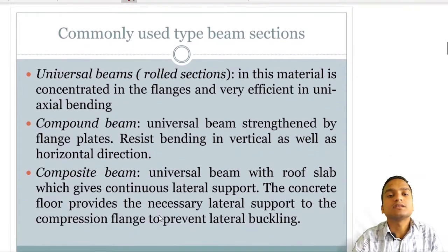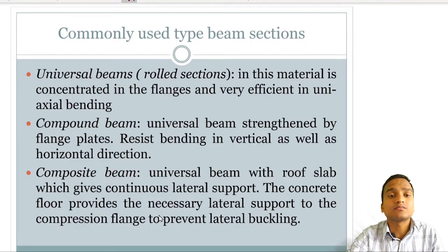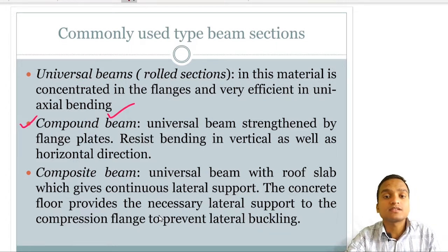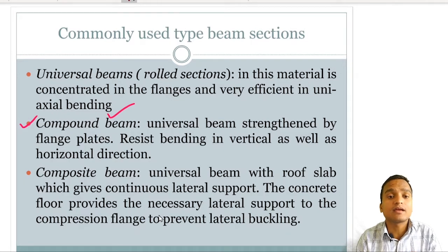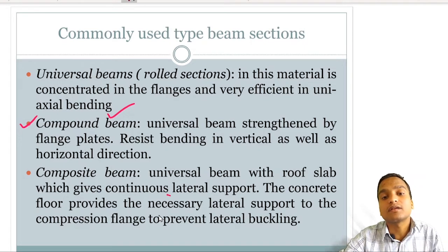In steel structures there are different types of beams. Universal beams are rolled sections where all material is concentrated in the flanges and are very efficient in uniaxial bending. Compound beams have additional plates added to the flanges and can resist bending in both vertical and horizontal directions. Composite beams combine a rolled section with the roof slab to provide lateral support.